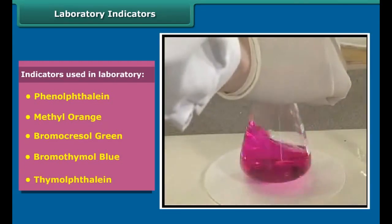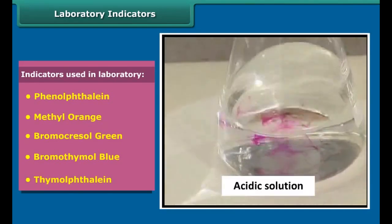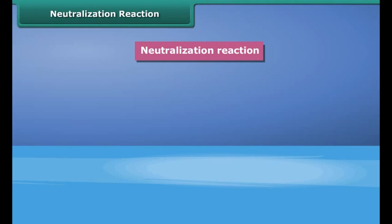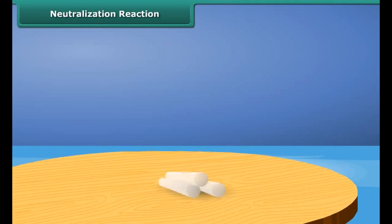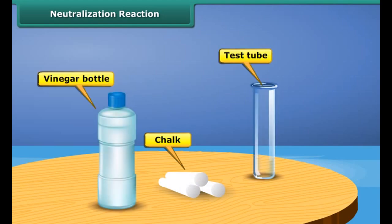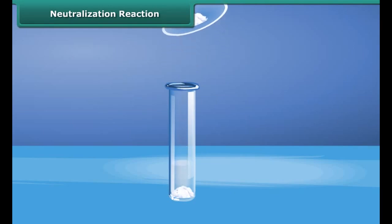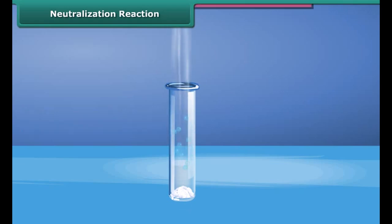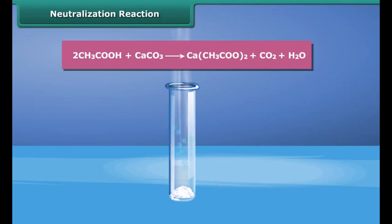Take some hydrochloric acid in a beaker, then add some phenolphthalein to it. Now add sodium hydroxide drop-wise with continuous stirring. After some time, a pink color slowly appears in the solution; as more sodium hydroxide is added, the pink color becomes brighter. On adding a drop of hydrochloric acid, the solution again becomes colorless. So phenolphthalein appears pink in alkaline solution, colorless in acidic solution, and colorless in neutral medium.